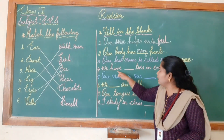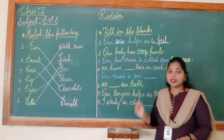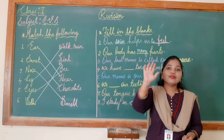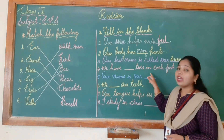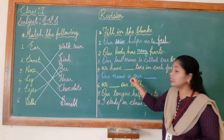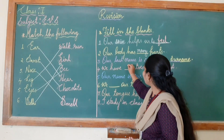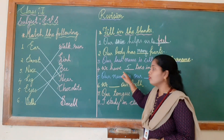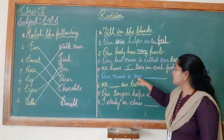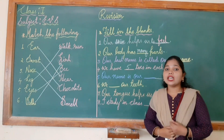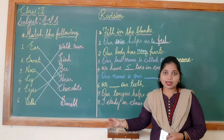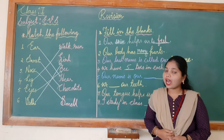Next: we have dash toes in each foot. Children, we have how many toes in each foot? We have five toes. So I will write 'five' here. We have five toes in each foot. Next: our name is our dash. Our name is our identity. This we already learned in Chapter 1, 'About Me'.